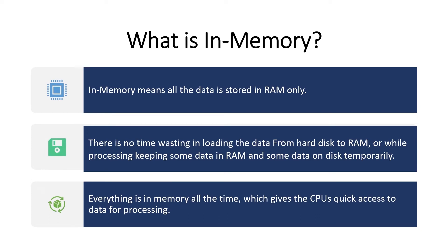Because data is stored in RAM, there is no time wasted loading data from a hard disk into RAM during processing. We process the data directly in RAM. Some data may be on disk temporarily, but everything is in memory all the time, which gives the CPU quick access to data for processing — resulting in a huge time saving in SAP HANA.